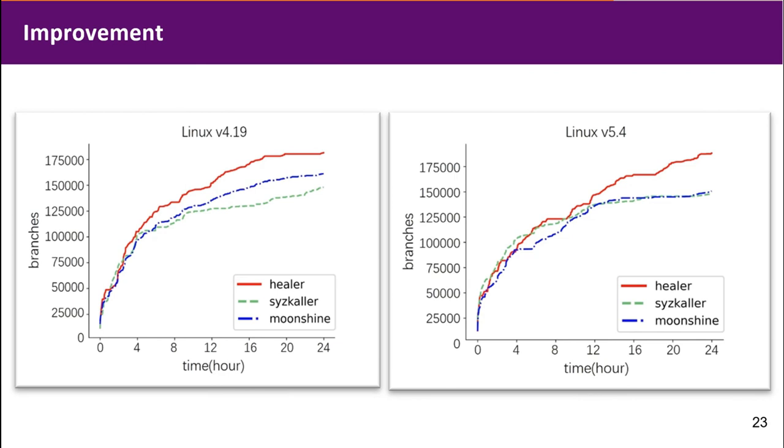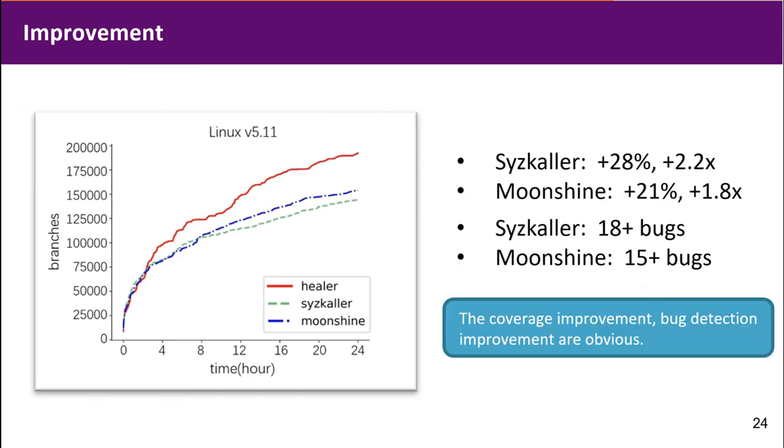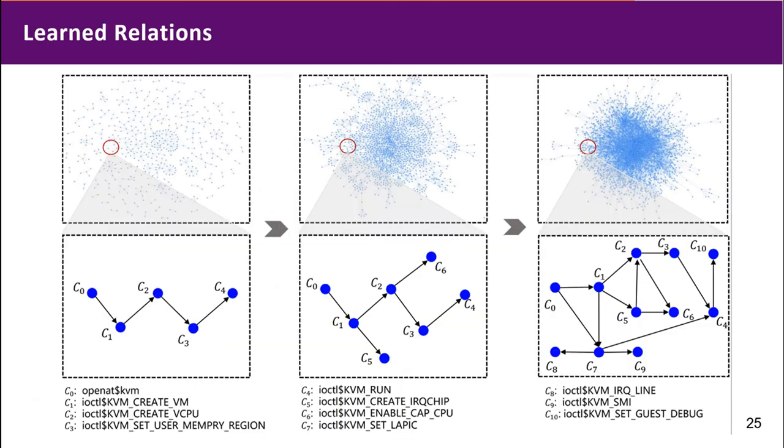We compare Heeler's performance with Syzkaller and Moonshine. We can see the coverage improvements and bug detection improvements are very obvious. Here is the example of learned relations. As we can see, we are actually learning a very complex graph. Each node is a syscall, and the edge represents the influence relations between syscalls. Here exists the example of a subgraph of KVM-related syscalls.